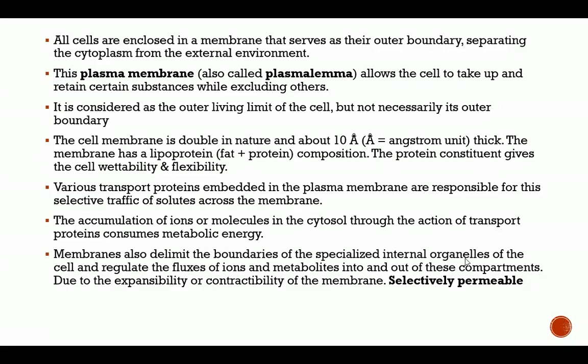The plasma membrane is considered the outer living limit of the cell, but not necessarily its outermost boundary. This implies that after the plasma membrane, no other part of a particular cell is alive — the cell wall is not a living part of the cell. In a previous lecture I differentiated the protoplasm from the cytoplasm: the protoplasm is every living thing within the cell, while the cytoplasm is every living thing within the cell excluding the nucleus. We have protoplasmic parts of the cell and non-protoplasmic parts.